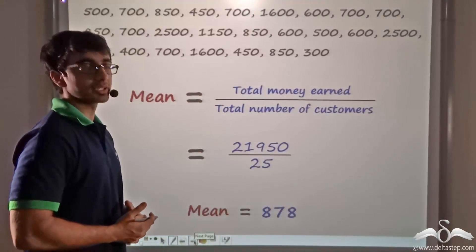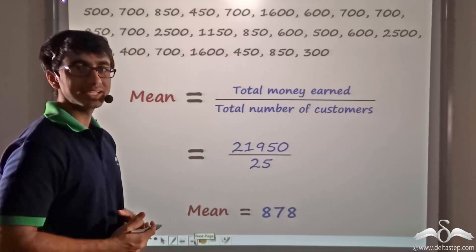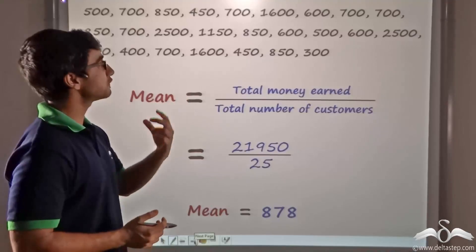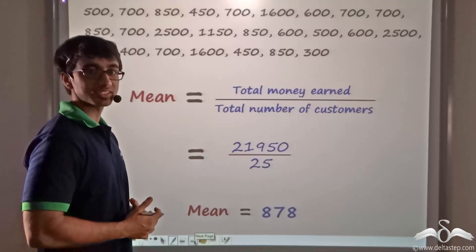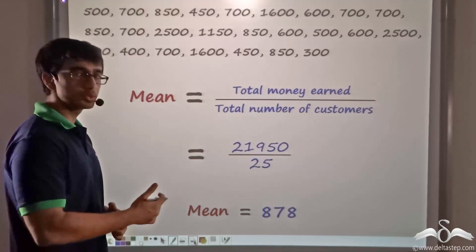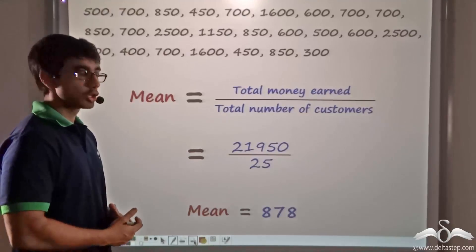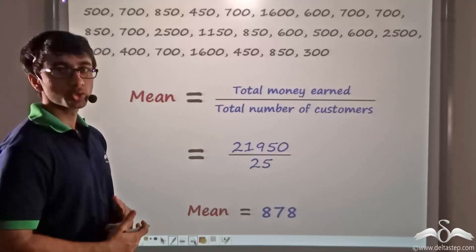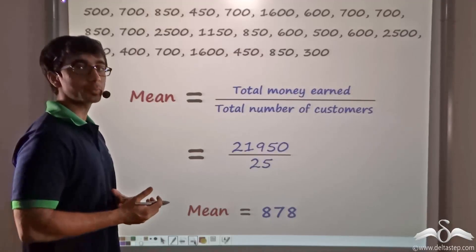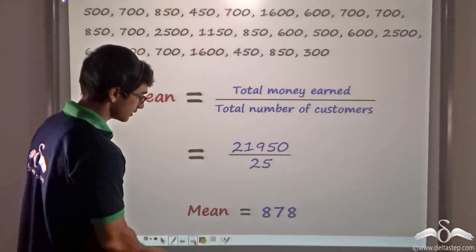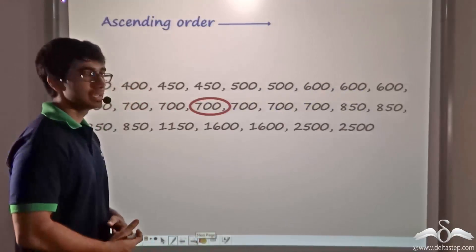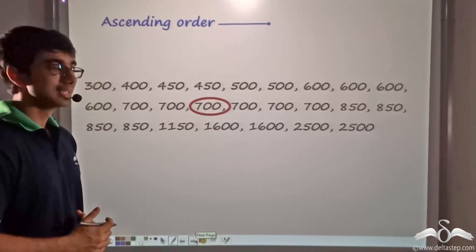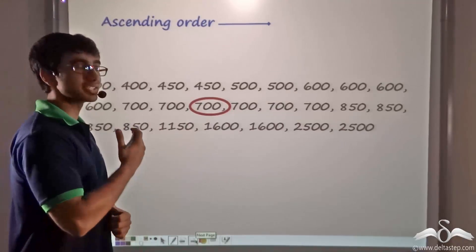To the shopkeeper, this value of 878 did not have much meaning, because he found that very few dresses were priced above this value — most of the dresses he had sold were below it. So in order to make sense of the data, he came up with another term. In order to obtain this term, he first arranged the data in ascending order.